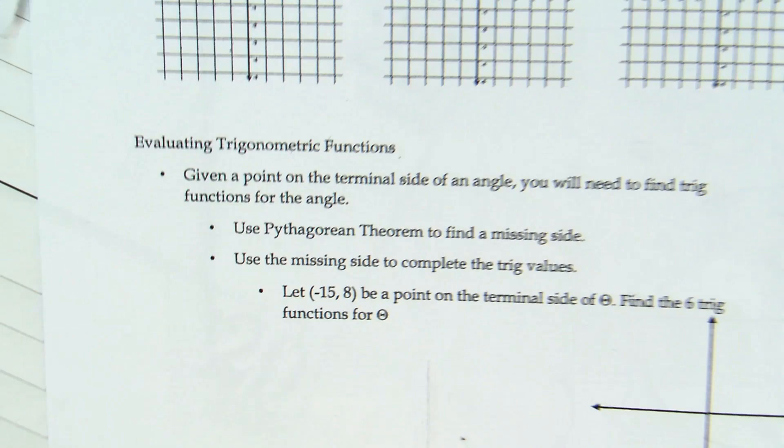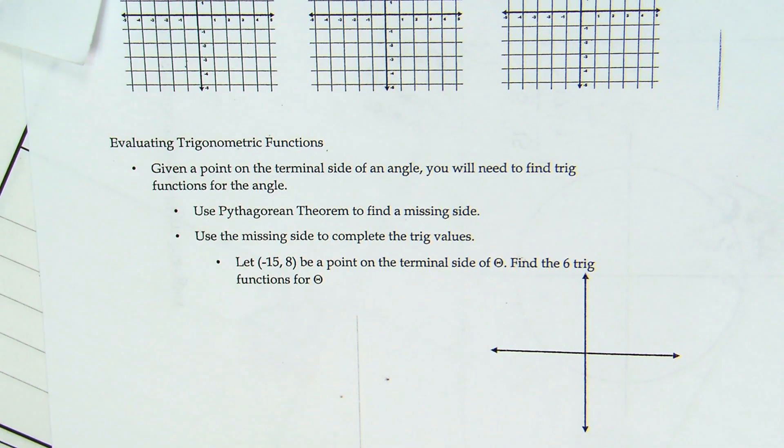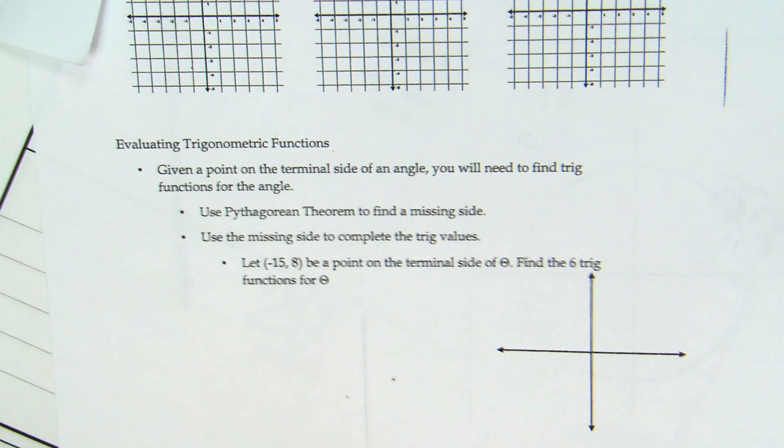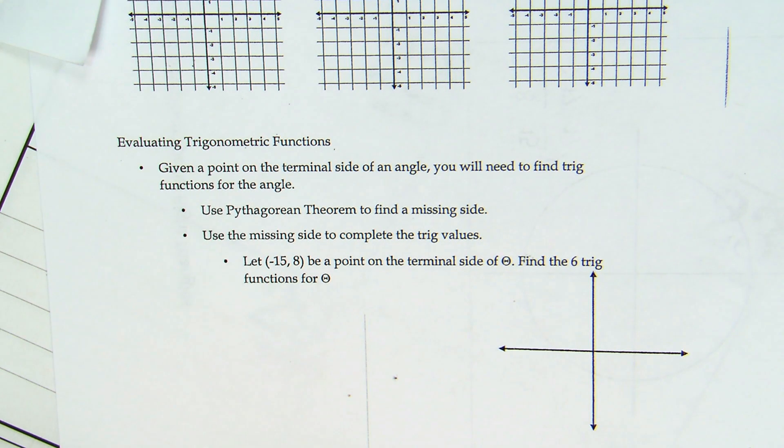Step two, the only part that does not involve the unit circle in this entire unit. Given the point on the terminal side of an angle, you will need to find trig functions for the angle. Use Pythagorean theorem to find the missing side. Use the missing side to complete the trig values. Let negative fifteen comma eight be a point on the terminal side of theta. Find the six trig functions for theta. Now technically we already did this—we did right triangle trig. The only difference is you could have negative values and that's okay.